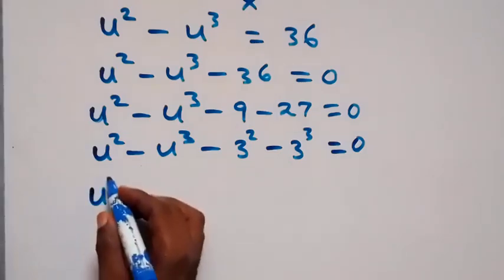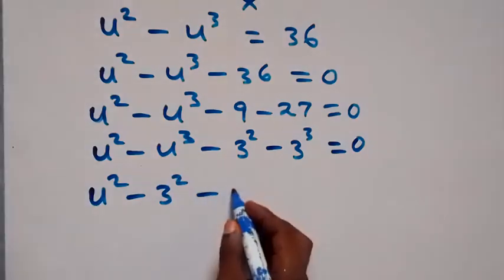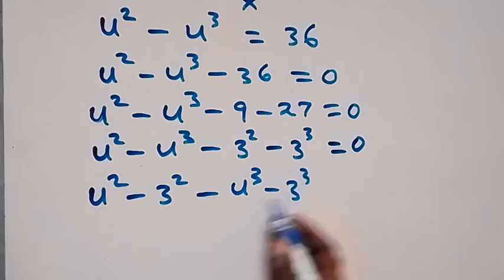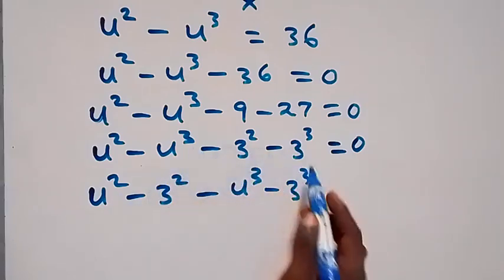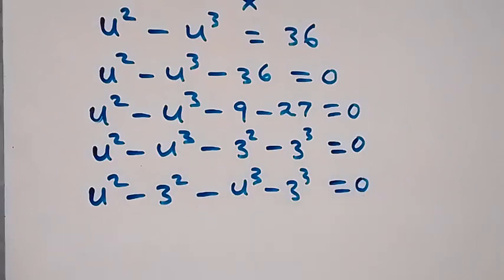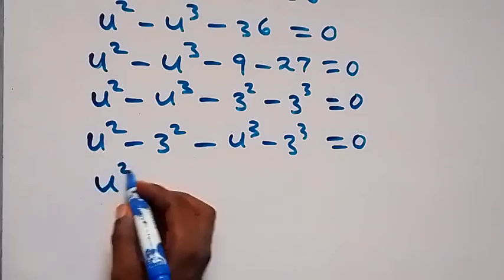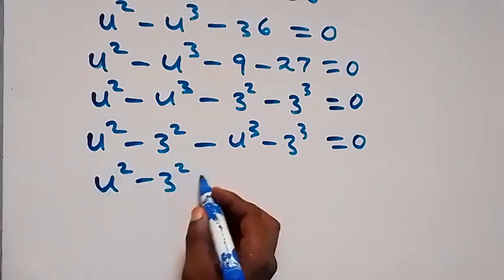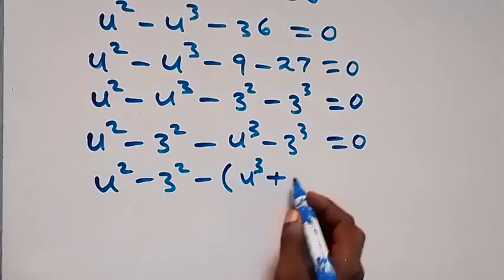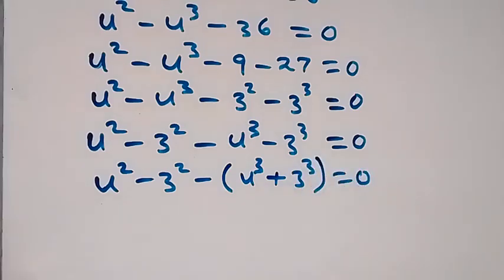So we write this as u squared minus u cubed minus 3 squared minus 3 cubed equals zero. Then when we group this together, we bring the squares together and the cubes together: u squared minus 3 squared, then minus u cubed minus 3 cubed, equals zero.